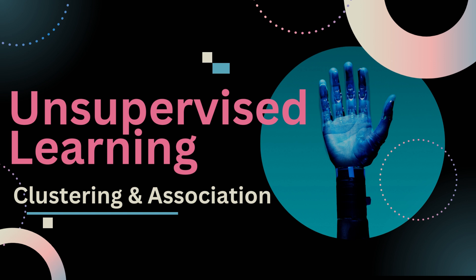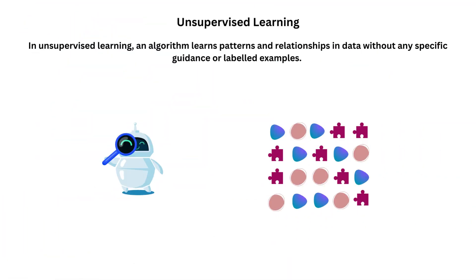Welcome to this exciting video on unsupervised learning. What is unsupervised learning? Unsupervised learning is a type of machine learning where an algorithm learns patterns and relationships in data with no specific guidance and no pre-labelled examples. Unsupervised learning helps computers discover hidden connections and structures in data independently.